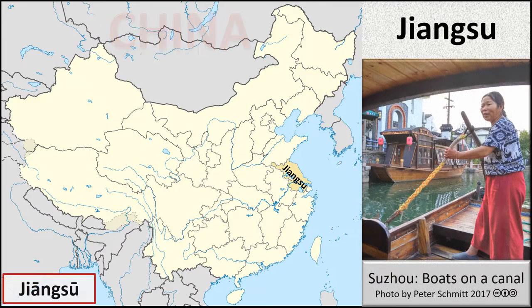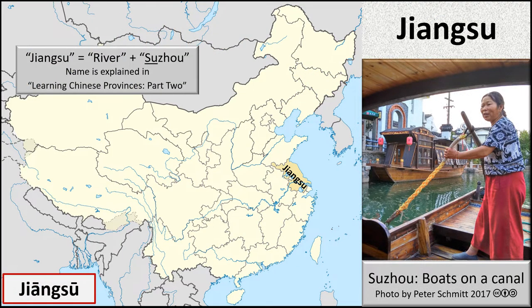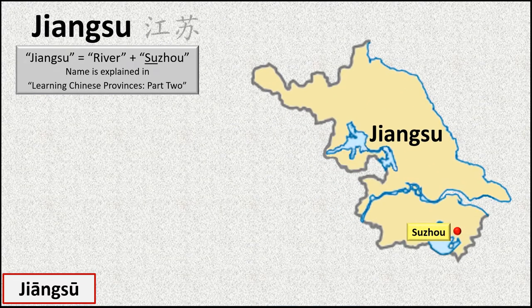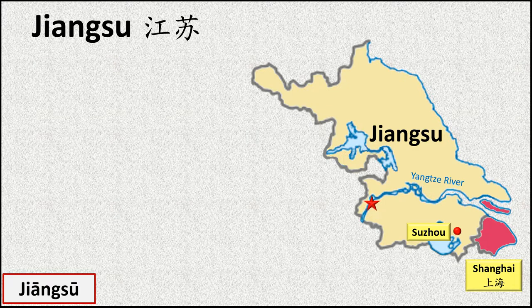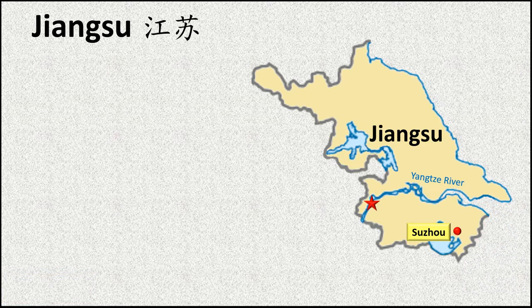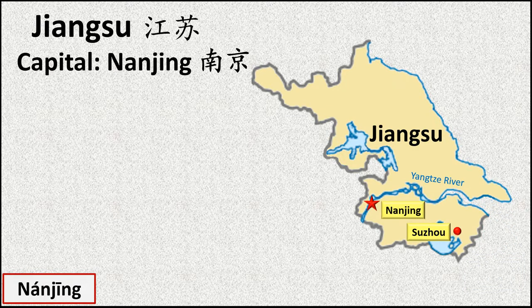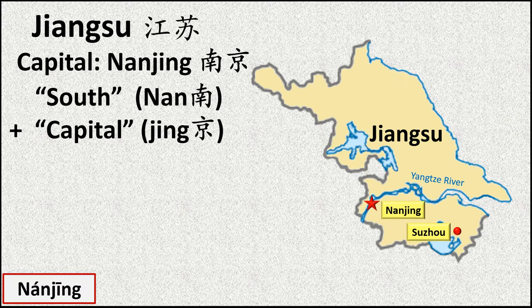Jiangsu is the combination of jiang, a word for river, and the first part of the name of the city Suzhou. The populous municipality of Shanghai is not part of Jiangsu province, but note the city's location for reference. The capital of Jiangsu province straddles the Yangtze River and is called Nanjing.